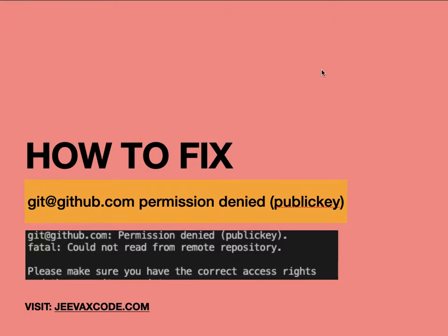Welcome back to my channel. Today we will discuss how to fix the GitHub 'permission denied public key' error. Basically, your SSH key is not registered, so you will not be able to directly push. For that, we need to create an SSH key and then add that SSH key to GitHub. Let's see the steps to resolve it.